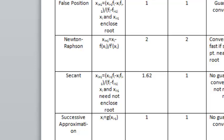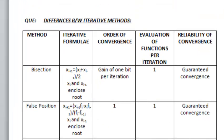We know that the iterative formula for all five methods are different. For bisection, xi+1 equals (xi + xi-1) divided by 2, where xi and xi-1 enclose the root.